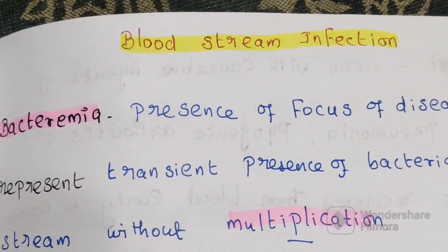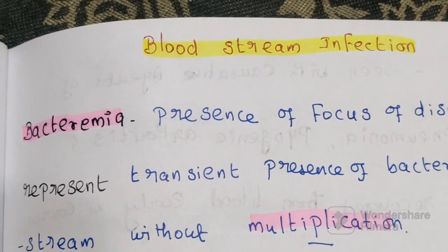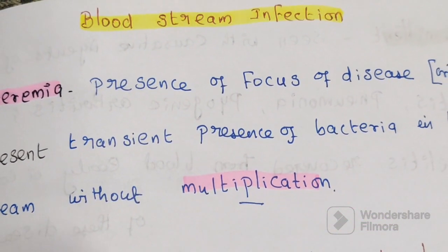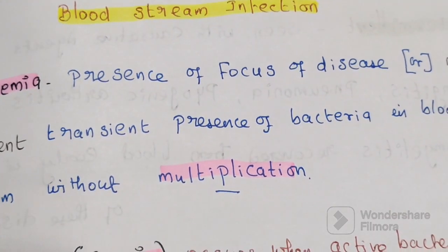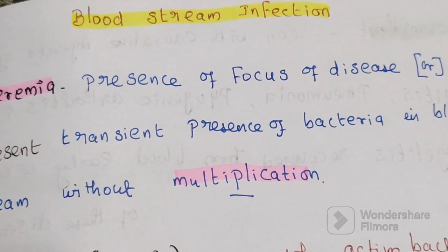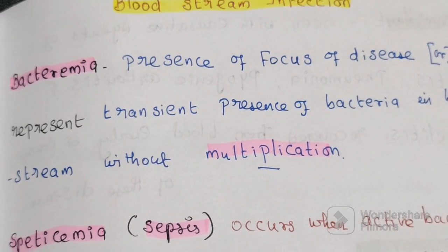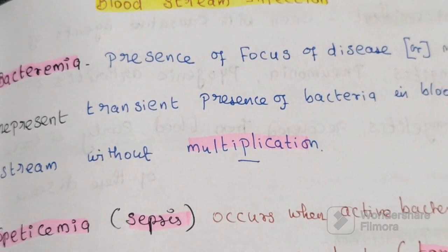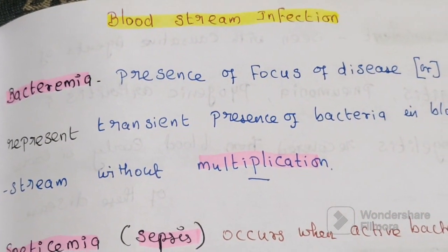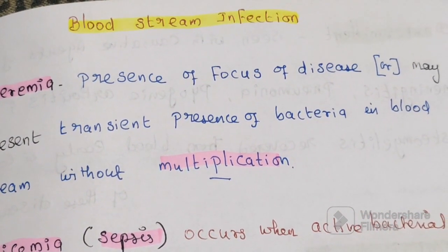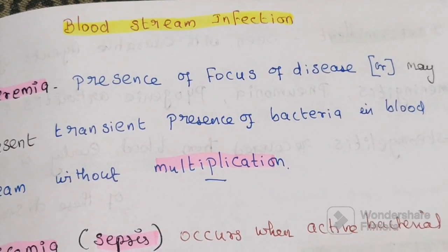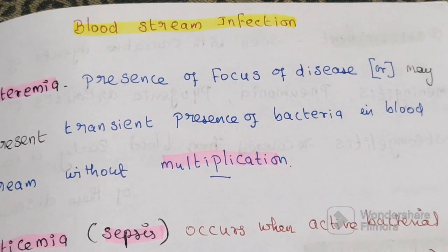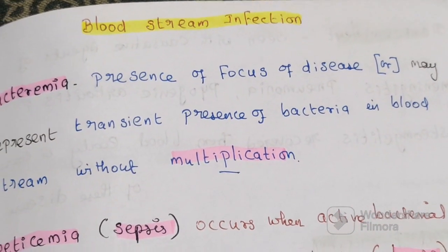Today's topic of discussion is bloodstream infection. What is bacteremia? Bacteremia is the presence of a focus of disease, or it may represent the transient presence of bacteria in the bloodstream without multiplication.